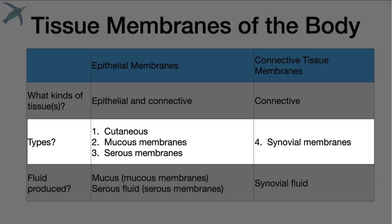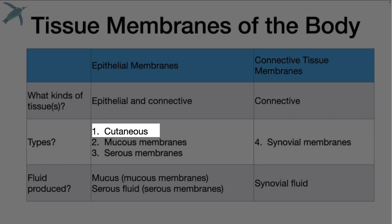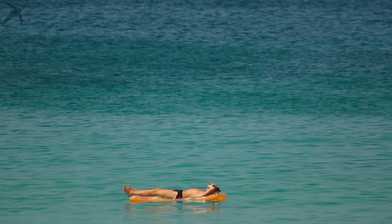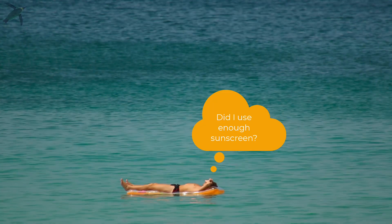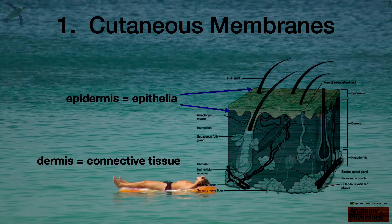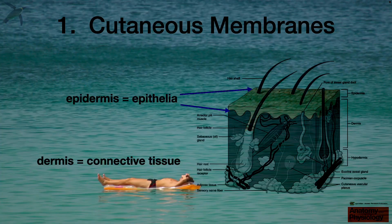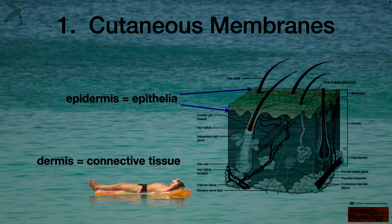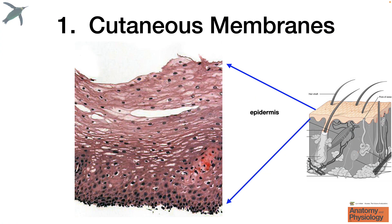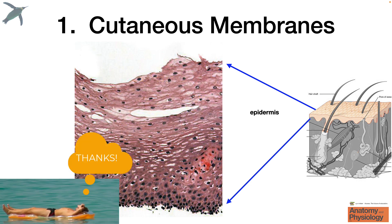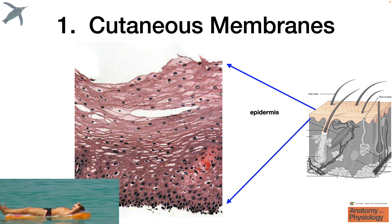There are four types altogether. We're going to start with the cutaneous membrane. When you hear the term cutaneous membrane, we are talking about the skin. It's considered an epithelial membrane because it contains epithelia — the epidermis — and connective tissue that lies beneath. When you explode out that epidermis, you can see this is stratified squamous epithelia. This is a really protective surface, and it protects us against pathogens, UV light, temperature changes, etc.